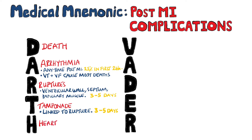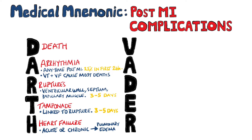H is for heart failure. Both acute and chronic forms are potential complications after a myocardial infarction. Acutely, if the heart cannot pump blood due to the infarct, fluid will quickly build up in the lungs and lead to pulmonary edema. The same can happen in chronic heart failure, but generally over a longer period of time.